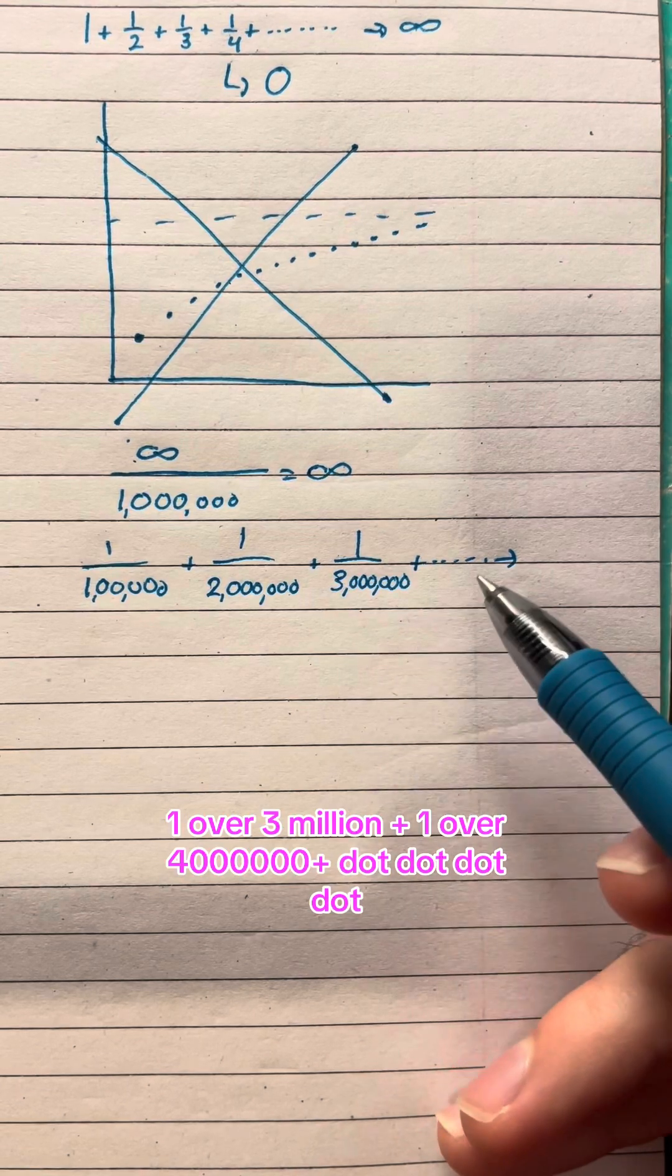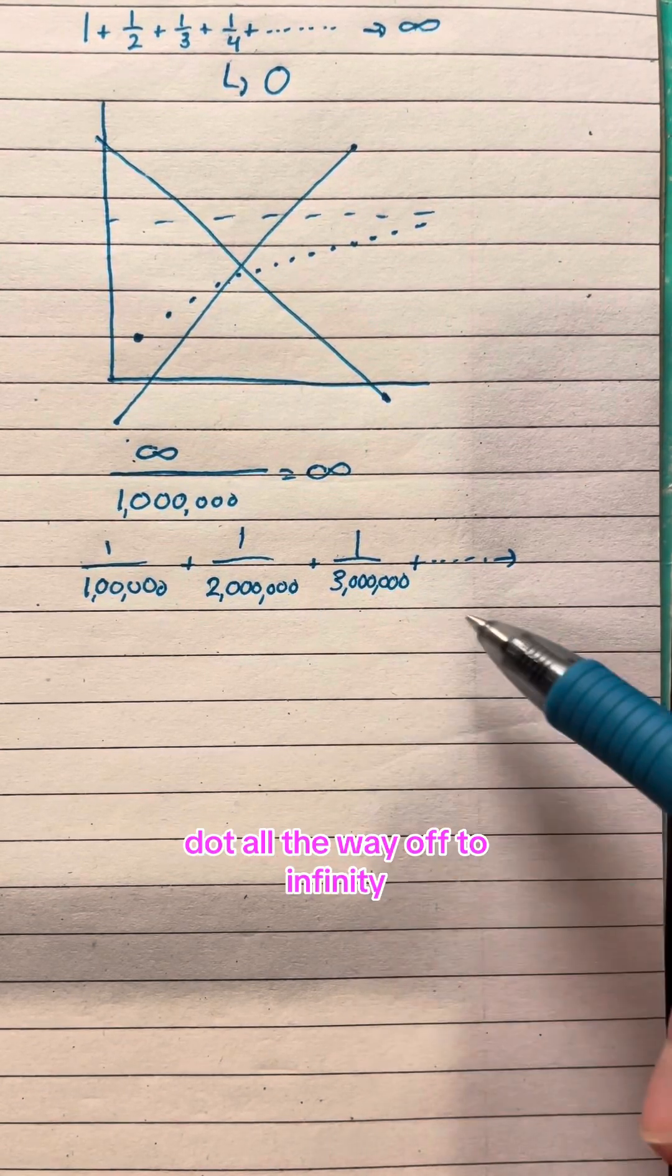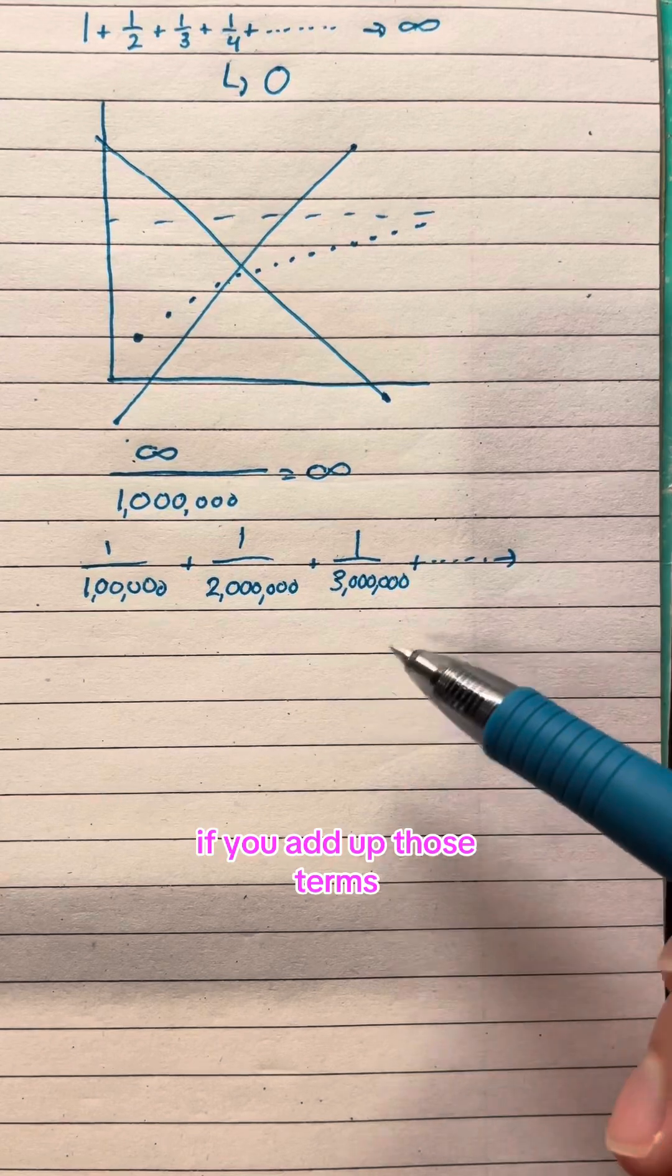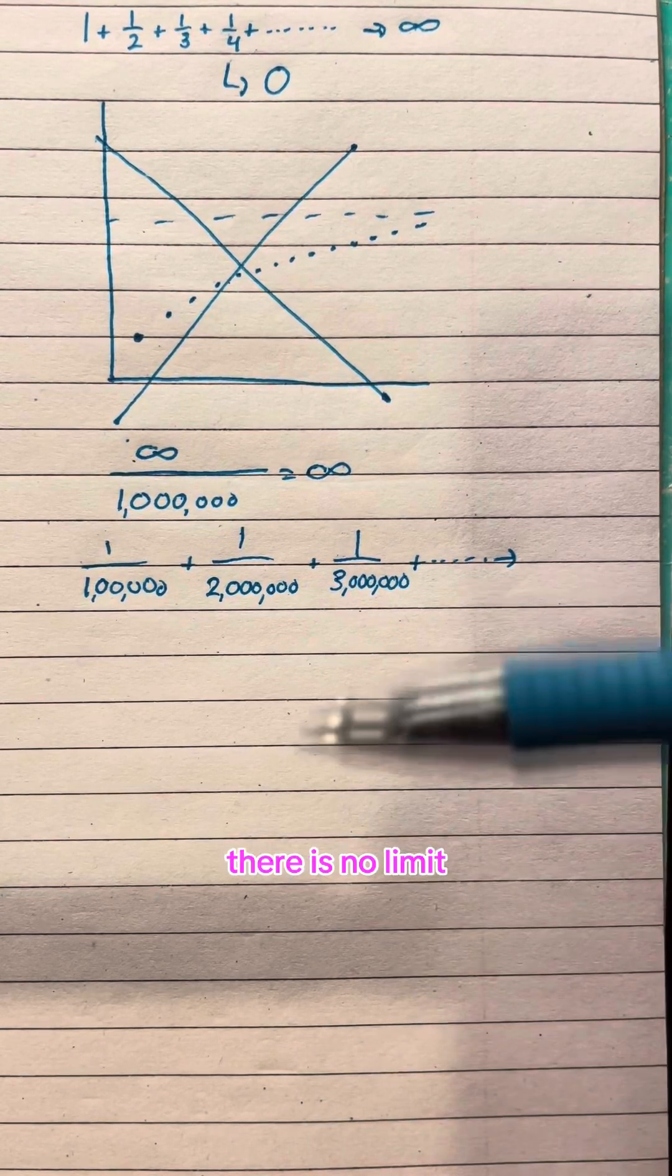one over three million, plus one over four million, plus dot dot dot all the way off to infinity. If you add up those terms, it still will approach infinity. There is no limit.